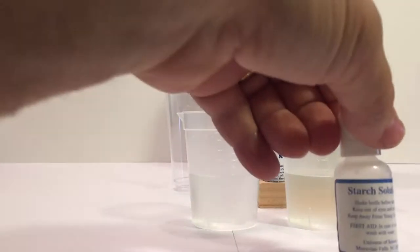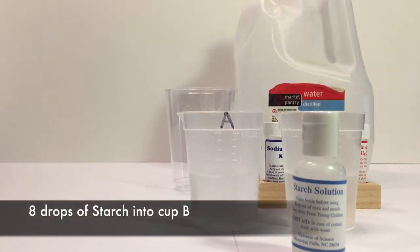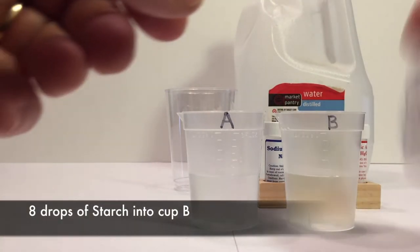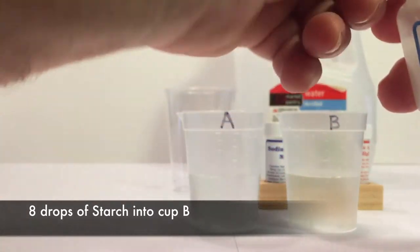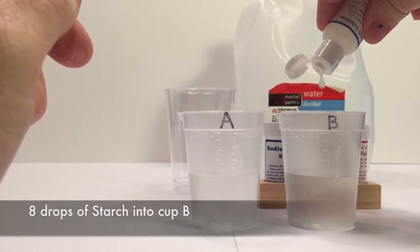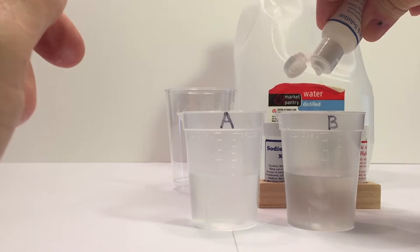Then we're going to take our liquid starch. It comes with the kit. You're going to give that a really good shake. You want to shake it up very well. And then you're going to put eight drops into cup B.